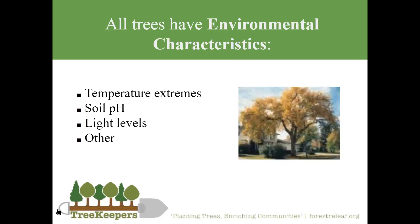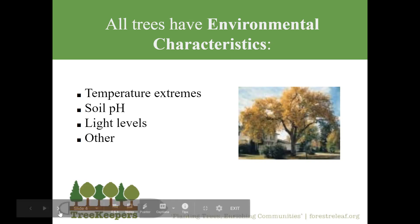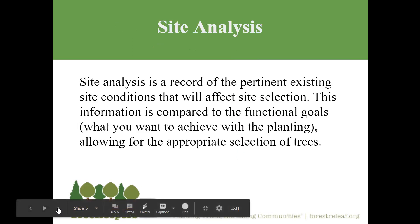Environmental characteristics: temperature extremes matter — every part of the country has its own palette of trees. St. Louis is right on a transition zone where we can grow some southern species and many northern species. Soil pH is a huge factor; typically in urban and suburban areas we experience higher than optimal, more alkaline soil conditions than we'd like. Light levels range from shade to full sun.